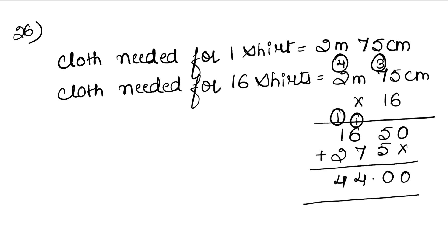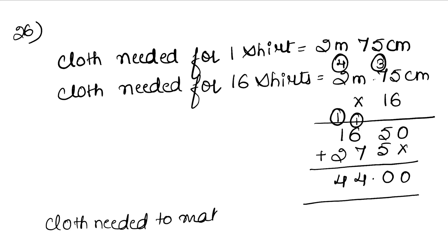After 2 it gets a decimal point because it is two meters 75 centimeters. So cloth needed to make 16 shirts is 44 meters.